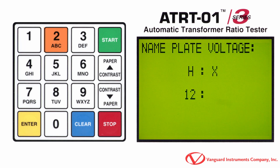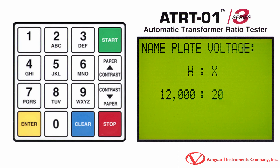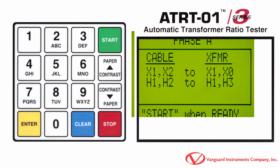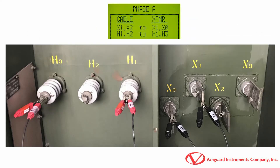Enter the H nameplate voltage value and press the Enter key. Enter the X nameplate voltage value and press the Enter key. Now we are given instructions on how to connect our cables to test phase A of the transformer. Please note that this will be different for each transformer type and also whether the X0 terminal is accessible or not.